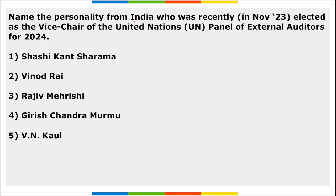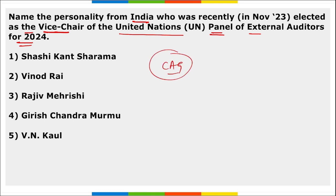Next: name the personality from India who was recently elected as the vice chair of the United Nations Panel on External Auditors for 2024. Our CAG — Comptroller and Auditor General of India — Girish Chandramurmu has been appointed as the vice chair of the United Nations Panel on External Auditors for the year 2024.